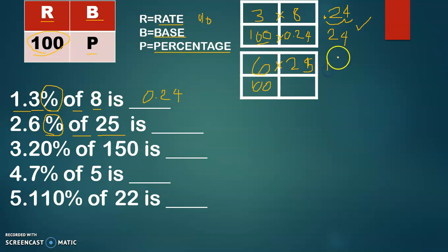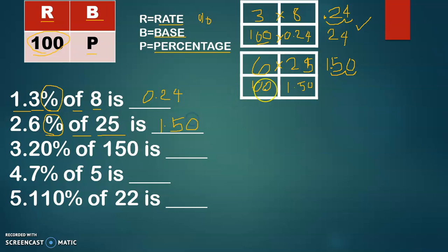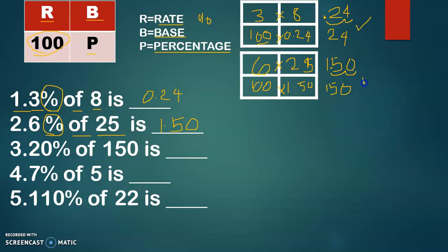6 multiplied by 25 is 150. Then 150 divided by 100 — just move the decimal point two places — gives 1.50. So 6% of 25 is 1.50. To verify: 100 times 1.50 should equal 150. If the product of the rate and the base, and the product of 100 and the percentage are equal, you are sure that your answer is correct.